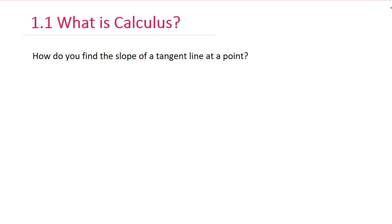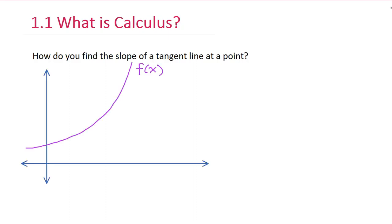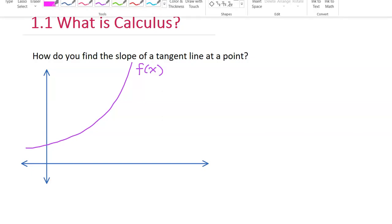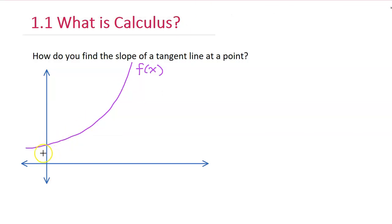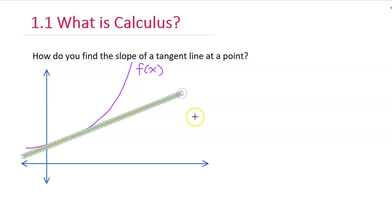So the first fundamental question is: how do you find the slope of a tangent line at a point? Here's a basic function — let's call it f of x. A tangent line is a line that just barely touches the function at a single point. So this would be a tangent line of the function f of x.